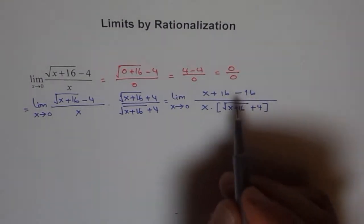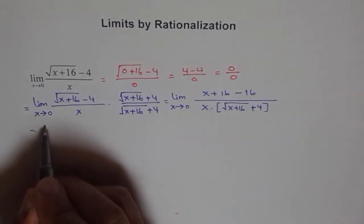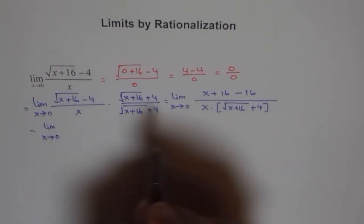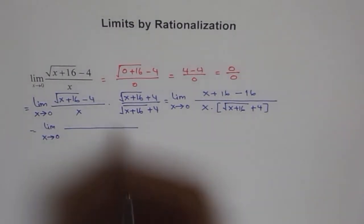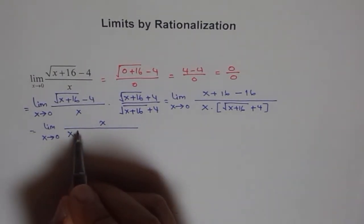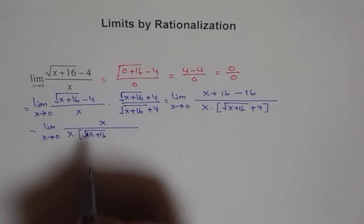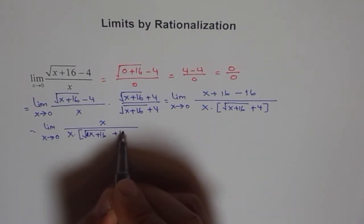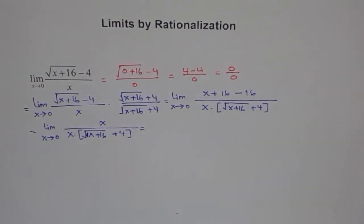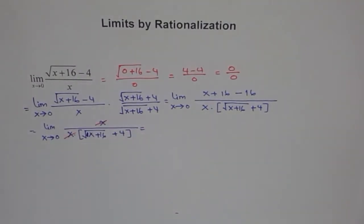Now, 16 minus 16 is 0. So, we are left with limit x approaches 0. For this function, which now can be simplified as x over x times square root of x plus 16 plus 4. And here, now we have x in numerator and x in denominator, which can be cancelled out.